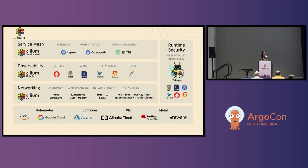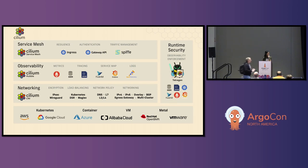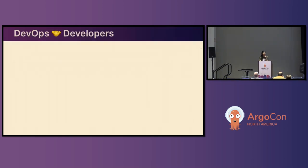Cilium is a networking tool that leverages eBPF, Extended Berkeley Packet Filter. We use Cilium as a CNI in the Kubernetes landscape, but it's also so much more than that. It's also a service mesh, it has security such as Tetragon, and it also has Hubble as an observability tool. This open source tool that leverages a powerful kernel module is used in many ways across different cloud providers.